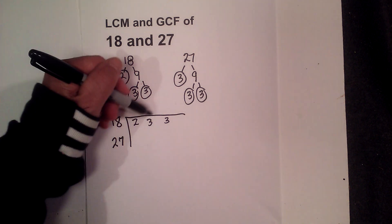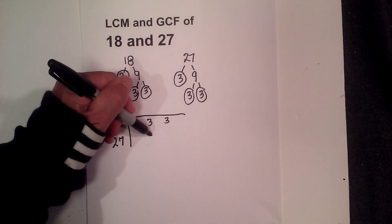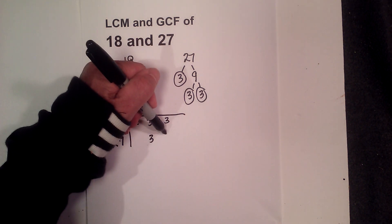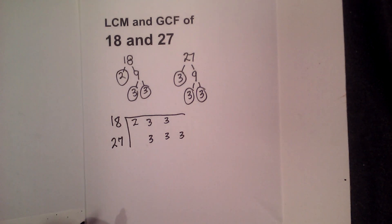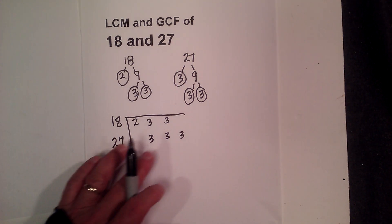And then for 27, I have 3. I'm going to skip the 2, and a 3, and a 3. So I have all my prime numbers now written down.